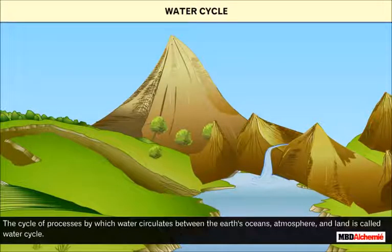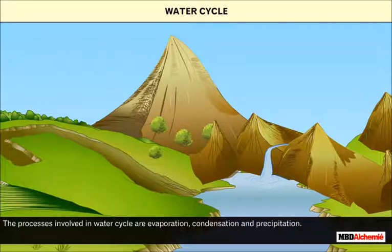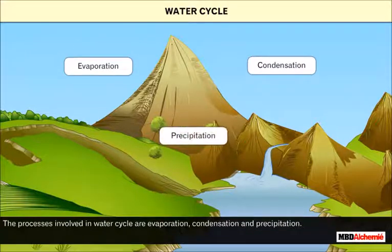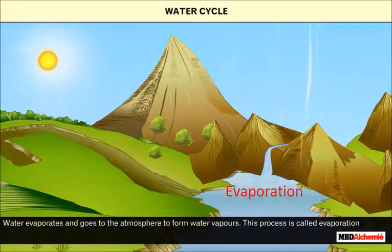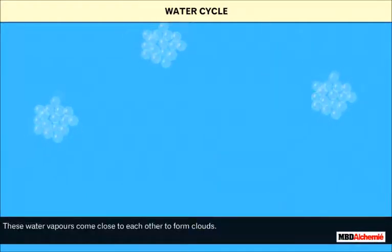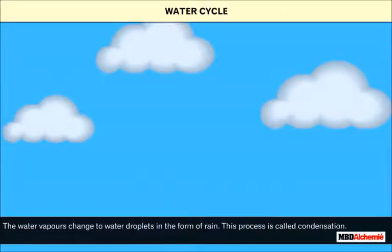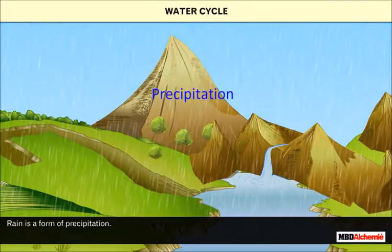The cycle of processes by which water circulates between the earth's oceans, atmosphere, and land is called the water cycle. The processes involved in the water cycle are evaporation, condensation, and precipitation. Water evaporates and goes to the atmosphere to form water vapors — this process is called evaporation. These water vapors come close to each other to form clouds, and the water vapors change to water droplets in the form of rain — this process is called condensation. Rain is a form of precipitation.